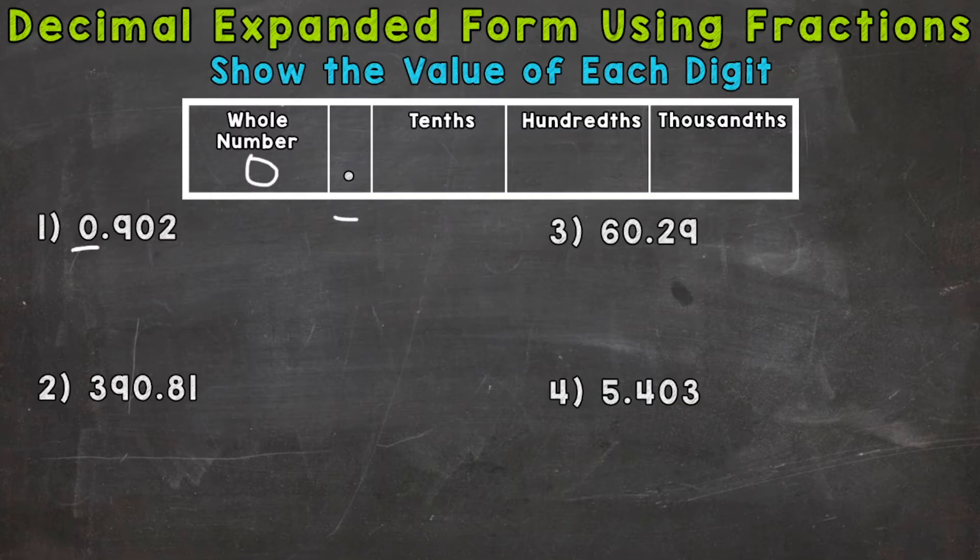Then we have a decimal. Then we have a nine in the tenths place, a zero in the hundredths, and a two in the thousandths. So 902 thousandths. So we have two digits that we need to show the value of, this nine and the two. We don't need to worry about the zeros.